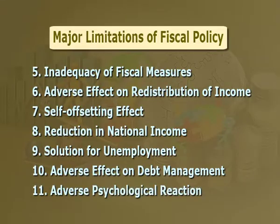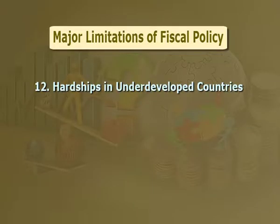Number eleven: adverse psychological reaction. Large deficit programs financed by borrowings bring about adverse psychological reactions. Rumors of government bankruptcy discourage investors and capital flight often takes place. Number twelve: hardships in underdeveloped countries. The creation of additional income through compensatory fiscal measures is not easily possible in underdeveloped countries as in advanced economies, mainly because the stagnating agricultural sector dominates the largest part of their economy.